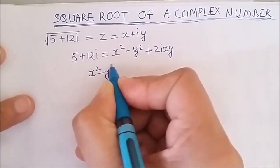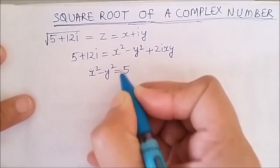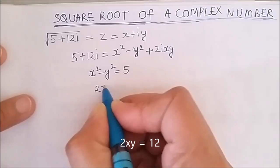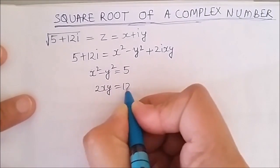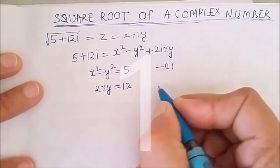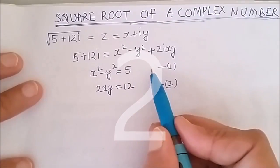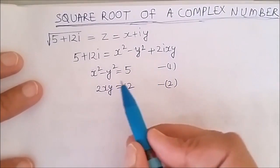x square minus y square is equal to 5, and 2xy is equal to 12. Let us say this is equation 1 and this is equation 2. Now by solving equation 1 and 2, I will get x and y and my complex number z.